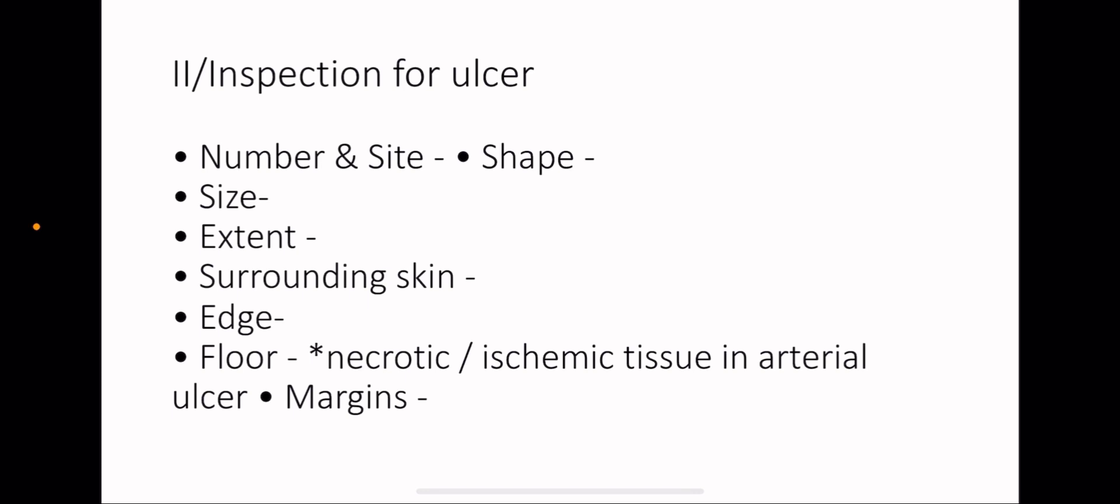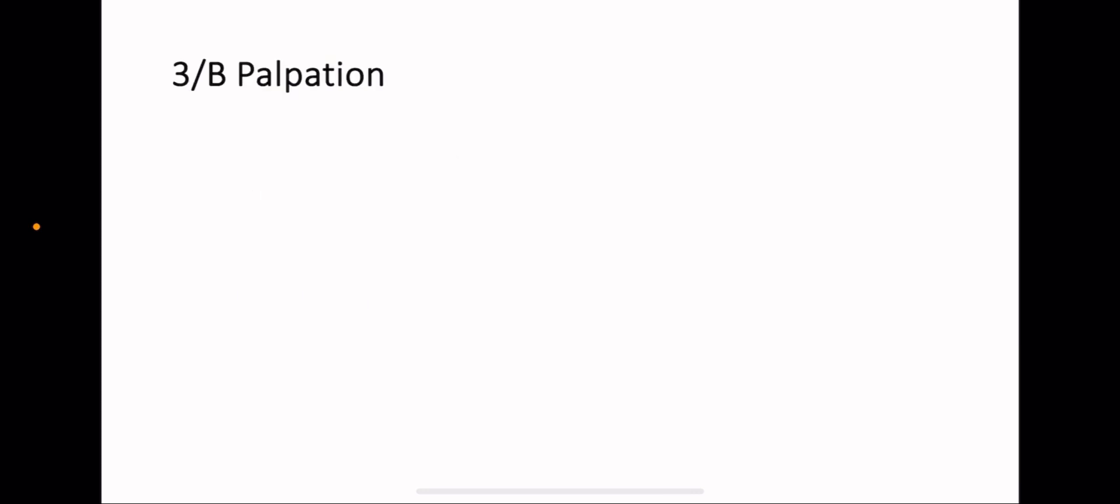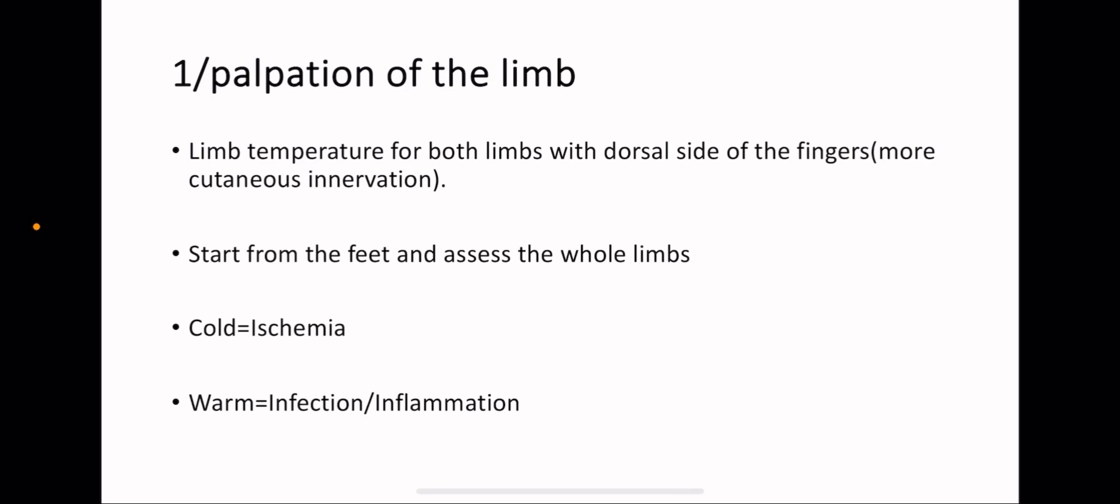Then inspection for ulcers: number and size of the ulcers, the shape, size, extent, surrounding skin, edge, floor, even necrotic ischemic tissue. And also we check for the margins. Three is local examination. As we said, we discussed A which is inspection. Now we will discuss B which is palpation.